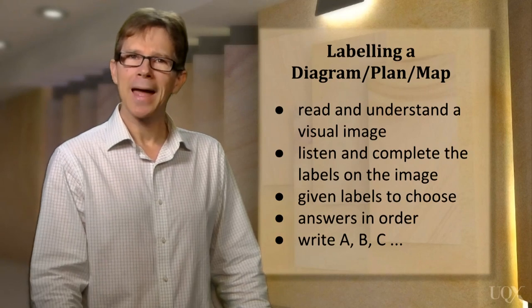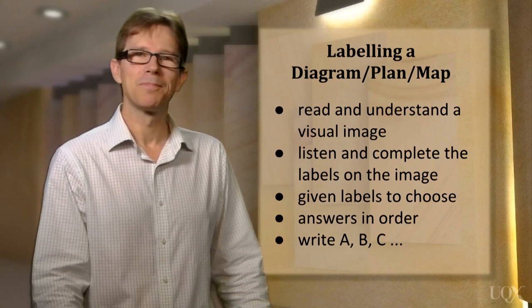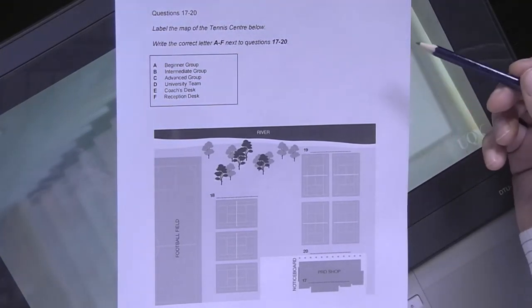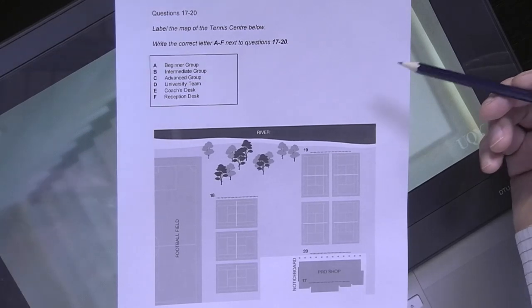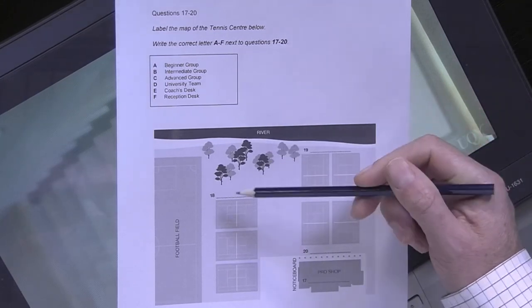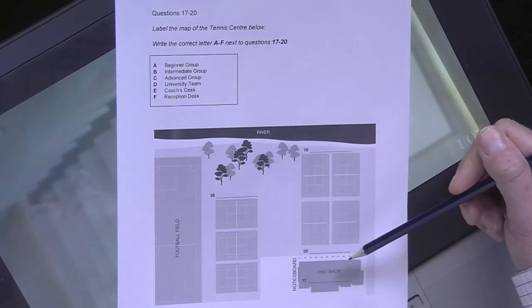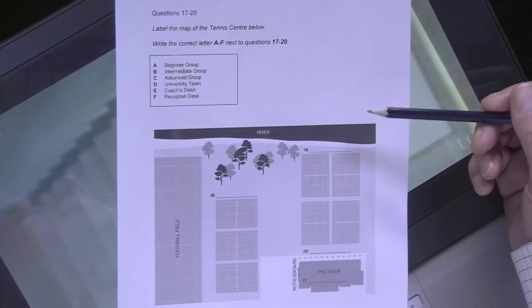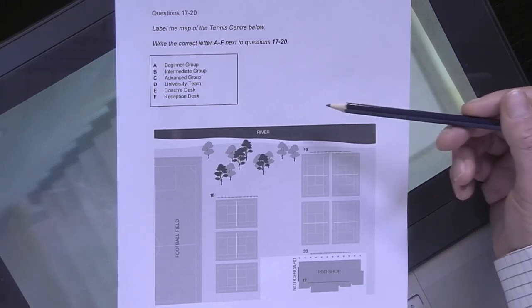Let's have a look at how to do an example. Before you listen, the first thing you should do is use the preparation time to look at the visual and work out what it represents. So in this example, we can see that it's a map, and these are the locations on the map. It represents the layout of a tennis centre.